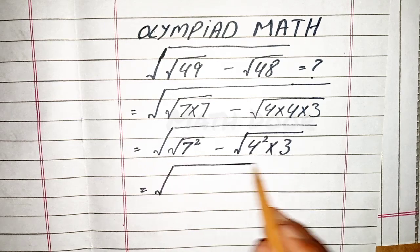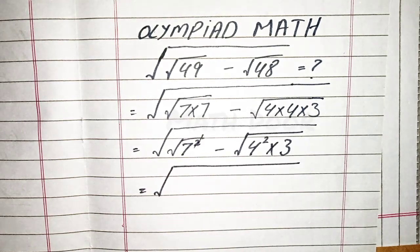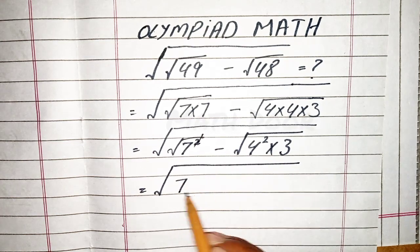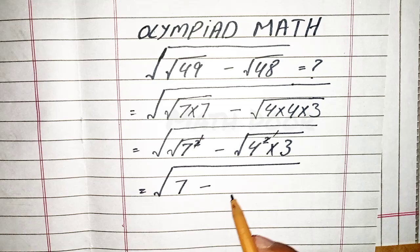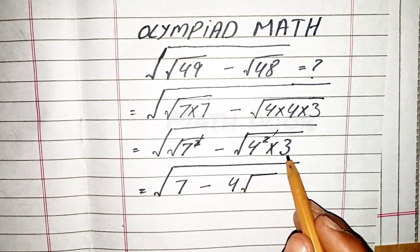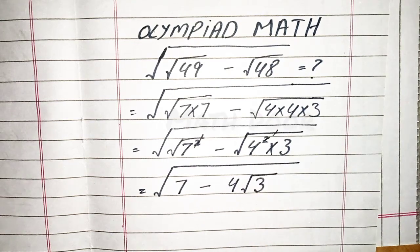In the next step, we cancel this square with this square root to get 7 minus 4, and the square root of 3 remains the same here.